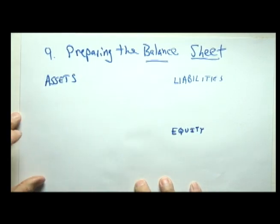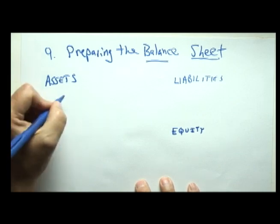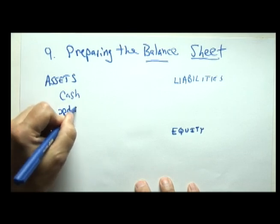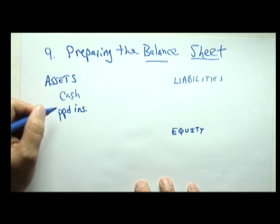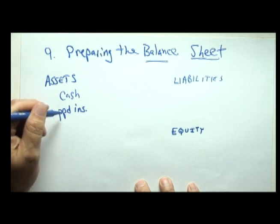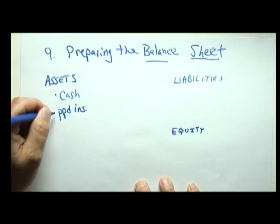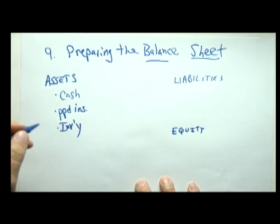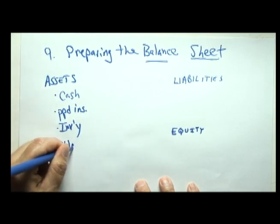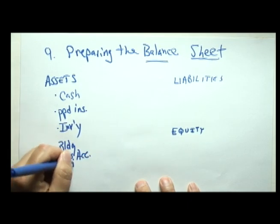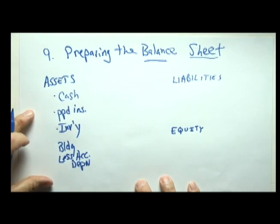We get these numbers right off of our database from video eight. Let's list cash first, and the second asset let's call it prepaid insurance. I referred to that as prepaid rent last period, but we bought the building so we don't really need to rent one. That prepaid asset is prepaid insurance rather than prepaid rent. We also have some inventory at the end of the period, a building, less the amount of depreciation — we're going to call that accumulated depreciation.